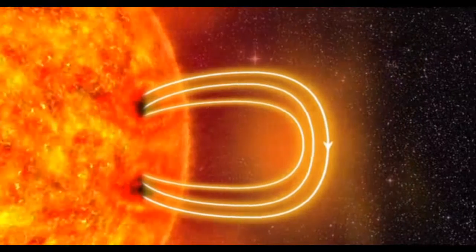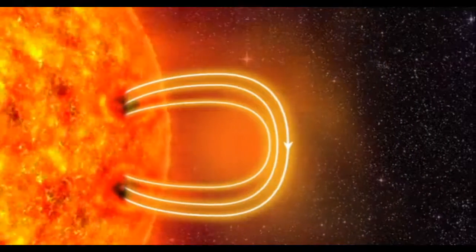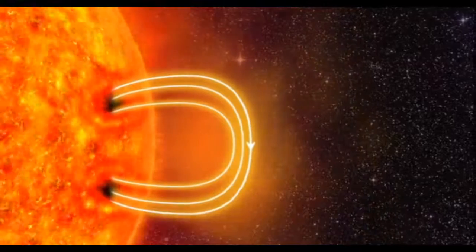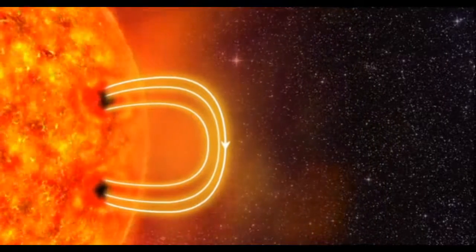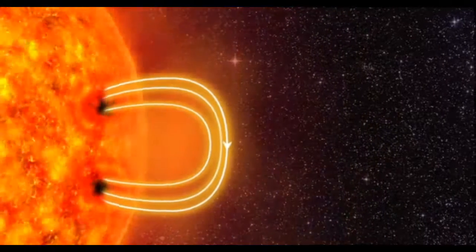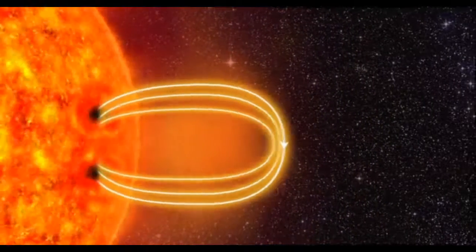The electrically charged gas is called plasma. The plasma drags the magnetic field further outwards. The magnetic field stretches and twists like a rubber band.